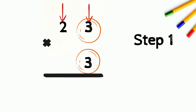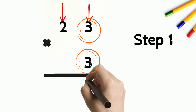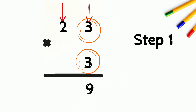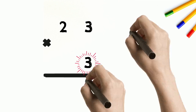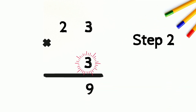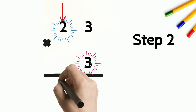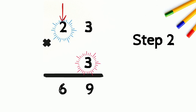So three times three equals nine. For the second step we multiply the bottom number by the tens place digit of the top number. So three times two equals six, and our answer is 69.